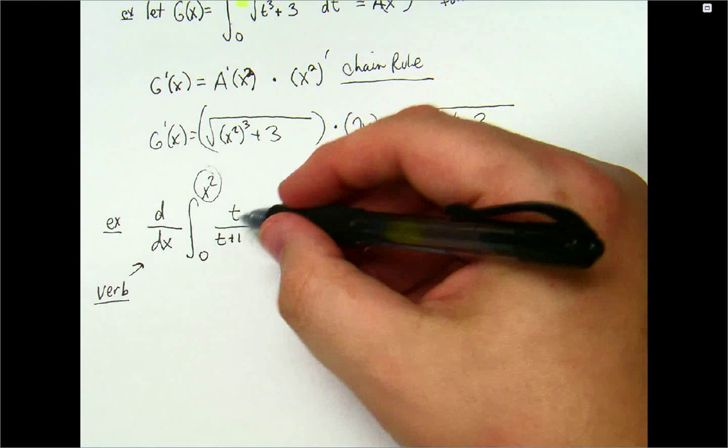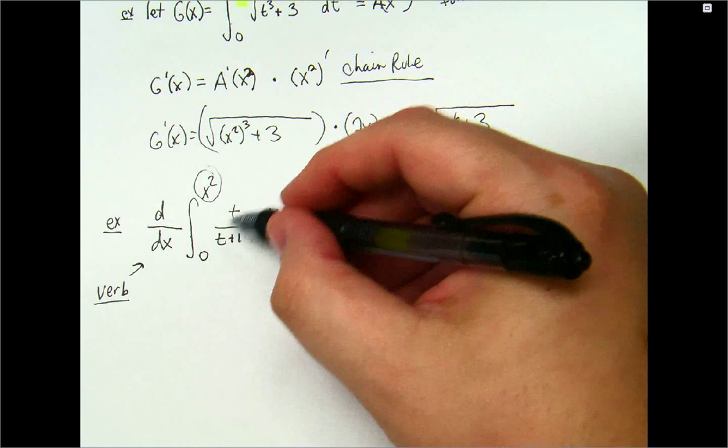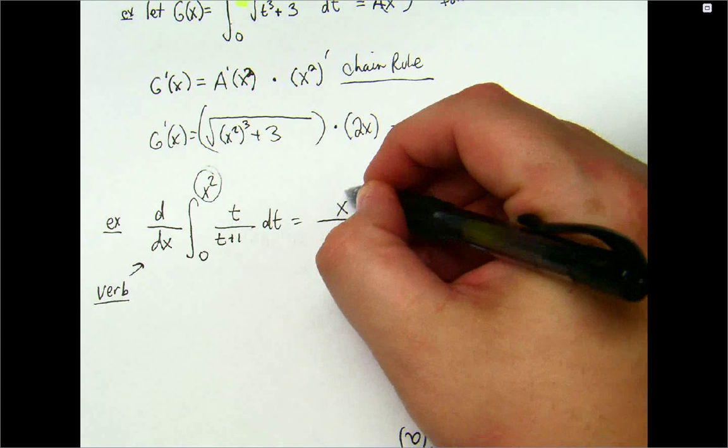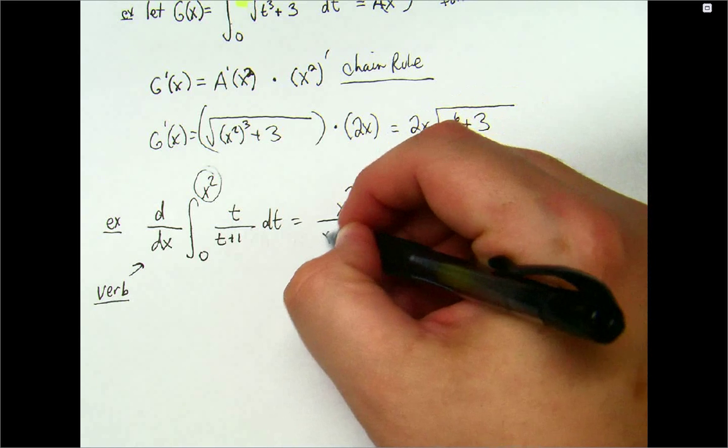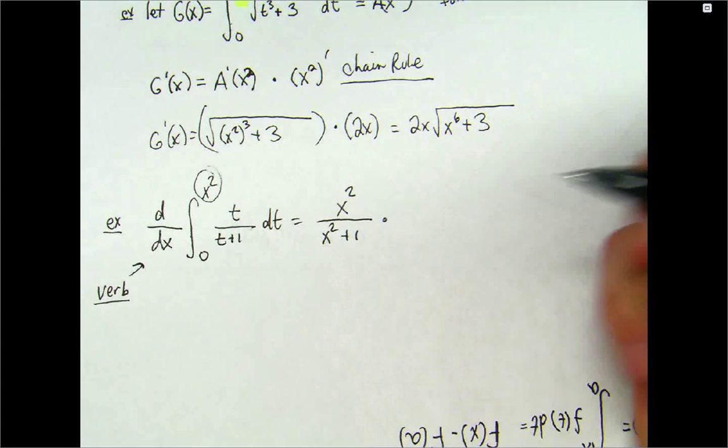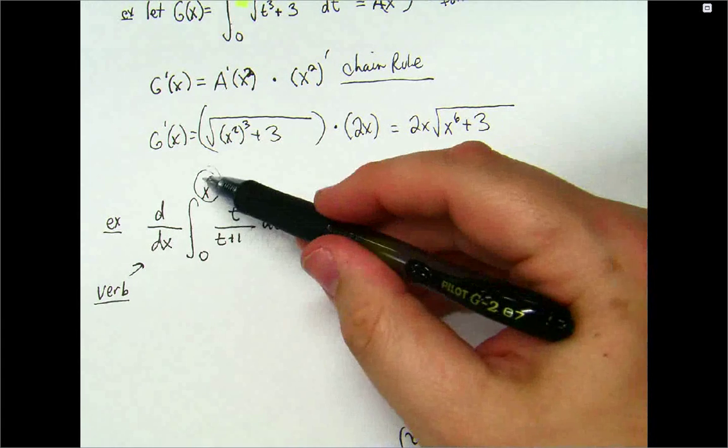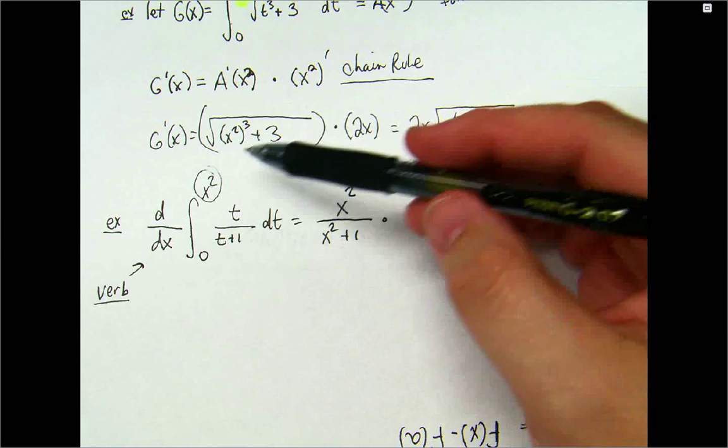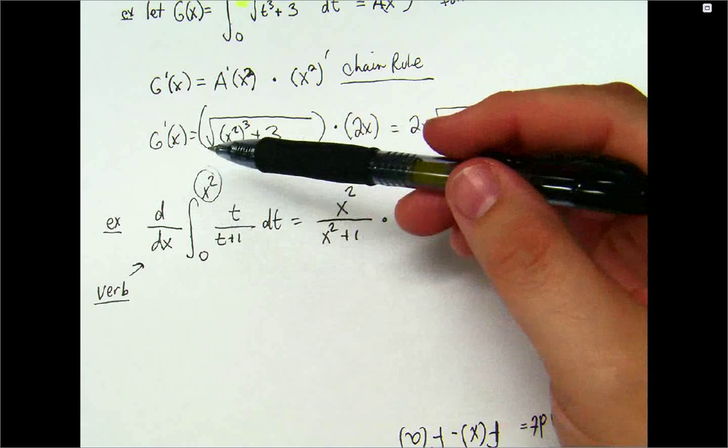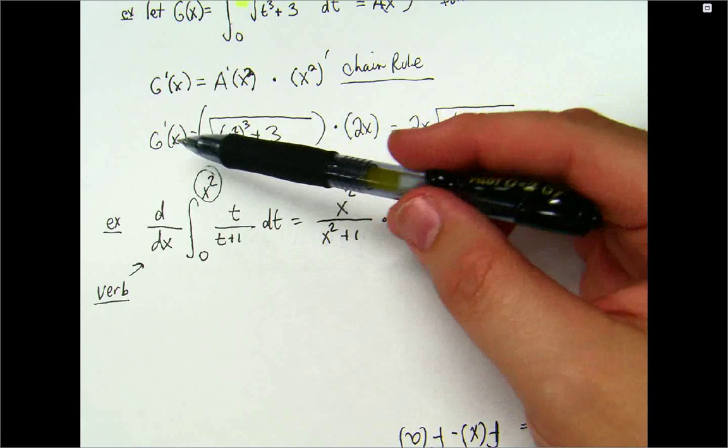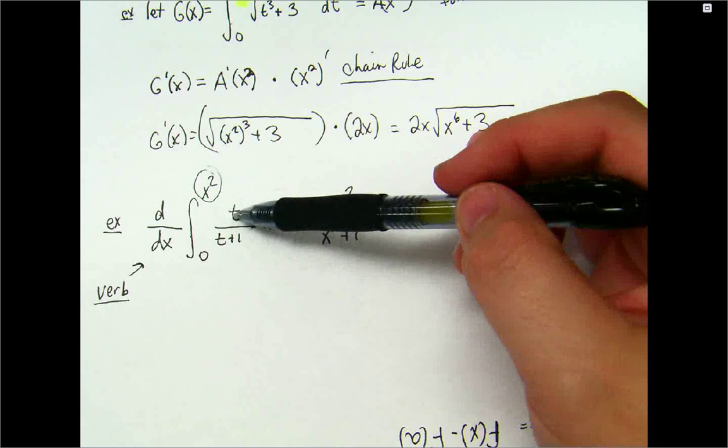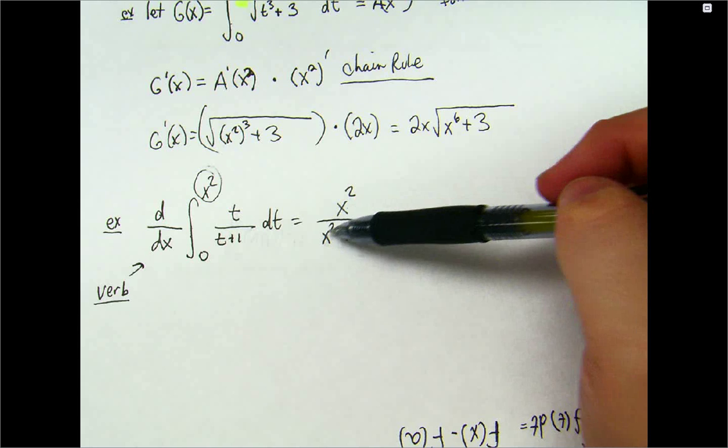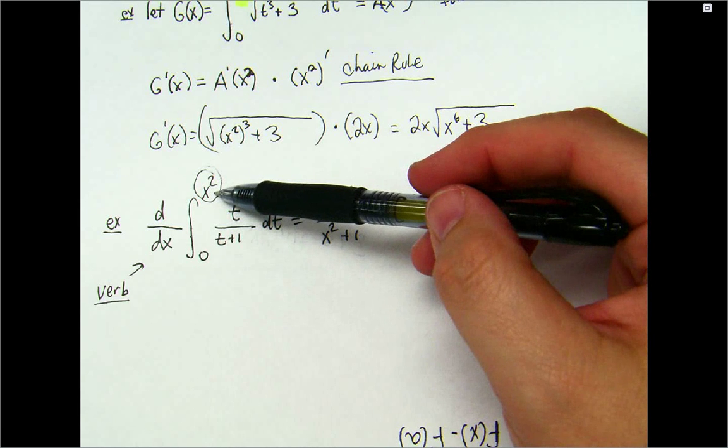So, what's going to happen to all the t's in my problem? They're going to become x squared. So, the t becomes x squared. Then, the t plus 1 becomes x squared plus 1. Now, if this was a... And, I'll just tell you this. If you don't want to have to remember anything, just remember one thing. Well, one thing with two parts. One, if you're taking the derivative of the integral, you're just going to replace all the t's with the upper limit, the x squared. So, we get x squared over x squared plus 1. And, then multiply by the chain... by the derivative of this upper limit.